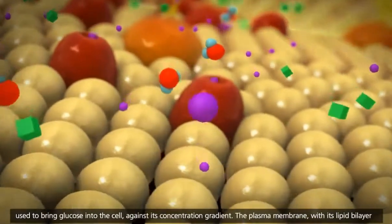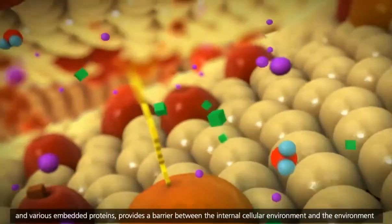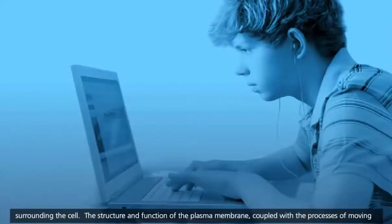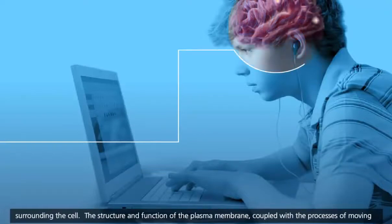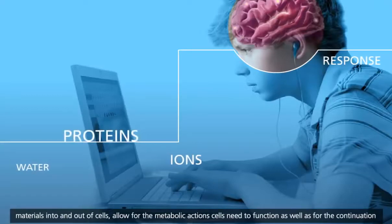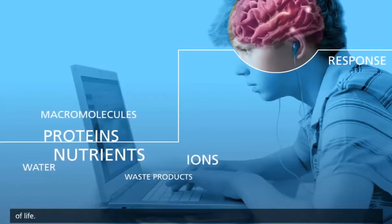The plasma membrane, with its lipid bilayer and various embedded proteins, provides a barrier between the internal cellular environment and the environment surrounding the cell. The structure and function of the plasma membrane, coupled with the processes of moving materials into and out of cells, allow for the metabolic action cells need to function, as well as for the continuation of life.